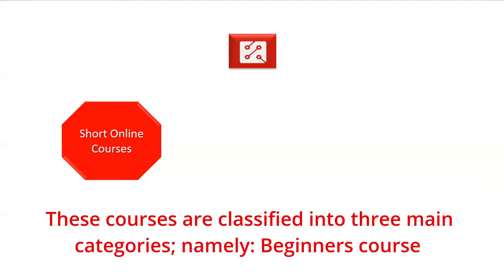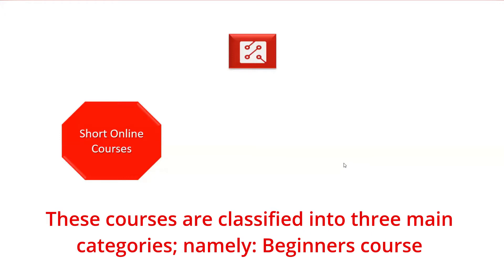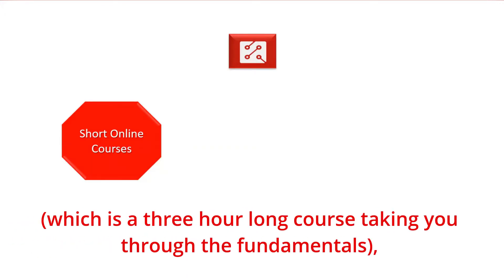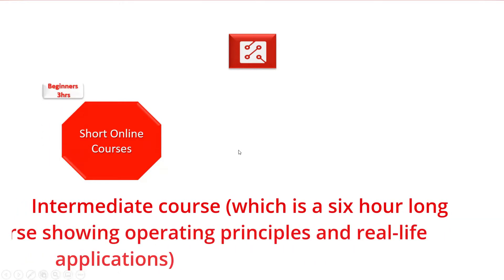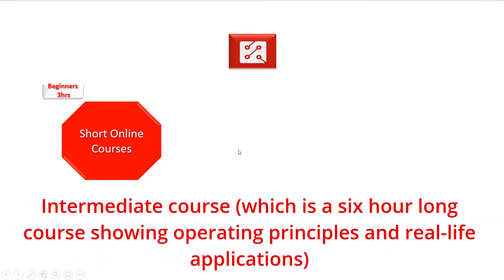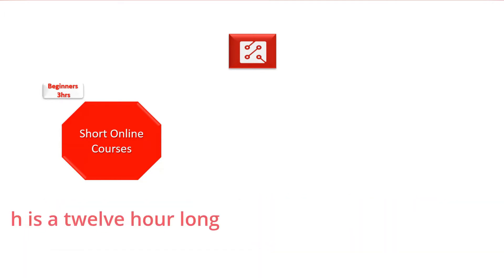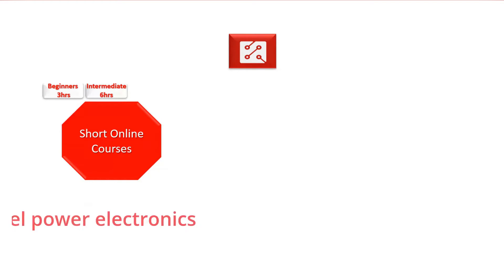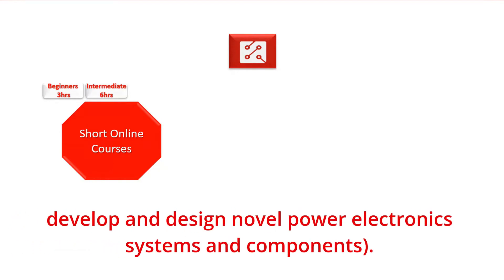These courses are classified into three main categories: the Beginner's course, which is a three-hour-long course taking you through the fundamentals; the Intermediate course, which is a six-hour-long course showing operating principles and real-life applications; and the Advanced course, which is a 12-hour-long course showing how to develop and design novel power electronics systems and components.